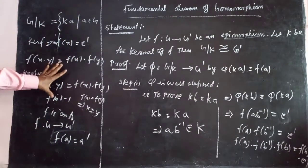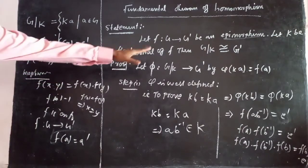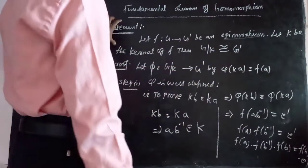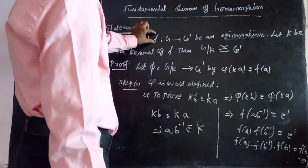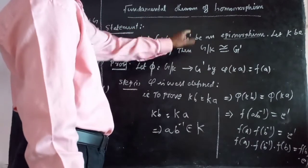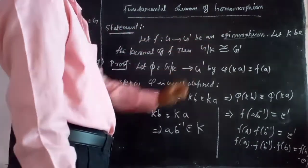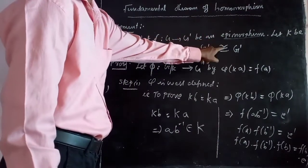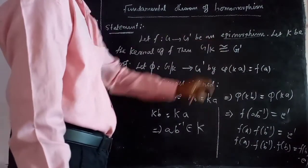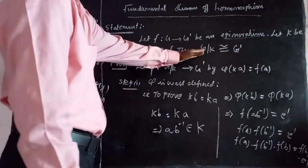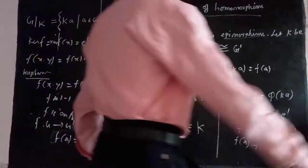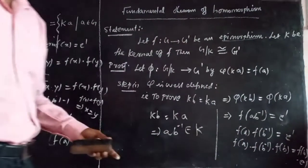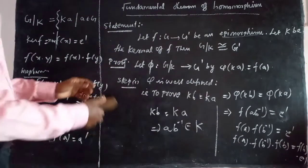This is the basic concept of the fundamental theorem. We need to prove: if F: G → G' is an epimorphism and K is the kernel of F, then G by K is isomorphic to G'. So we have to prove G/K ≅ G'.